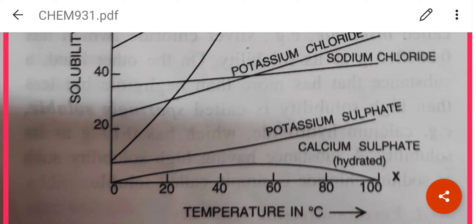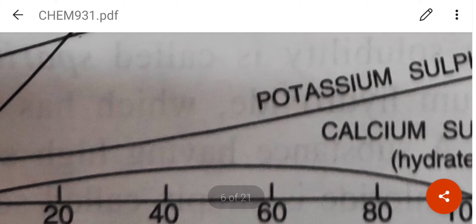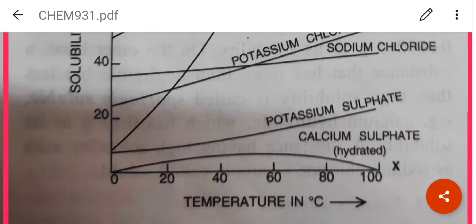For calcium sulphate, with the increase in temperature the solubility goes on increasing, but after further increase in temperature it goes on decreasing and finally becomes zero.